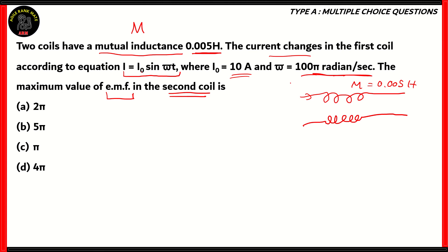We need to find out the maximum value of EMF. EMF basically means the voltage passing through the second coil. So, therefore, the EMF can be represented as M times the derivative of the current. Mutual inductance times the derivative of the current passing through the first coil would give us the maximum EMF of the second coil.